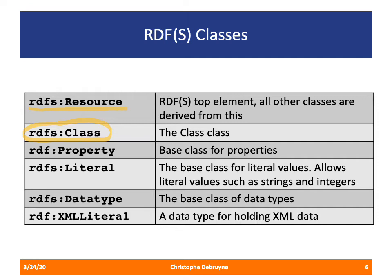Similarly, there's a base class for properties, but instead of proposing a new tag, they reuse RDF property — notice the RDF namespace. All properties in RDFS vocabularies are instances of RDF property. RDFS has also introduced RDFS literal as the base class for all literal values, ranging from strings, integers, to dates — all things you can print on a screen.